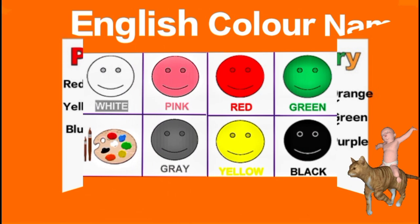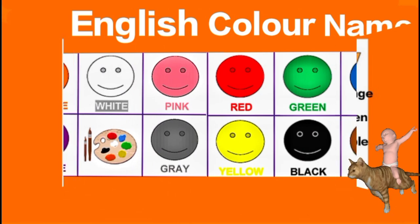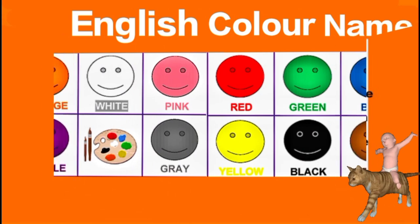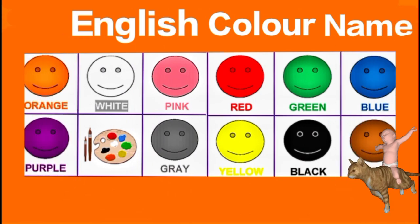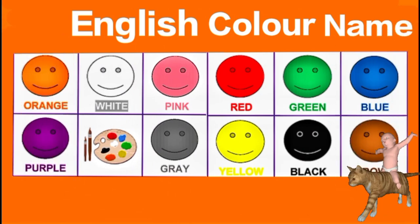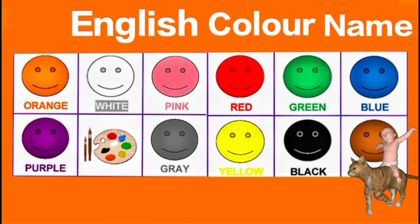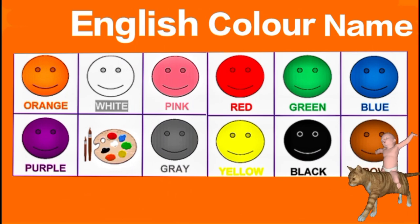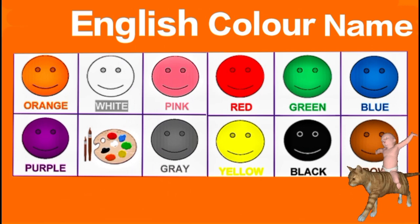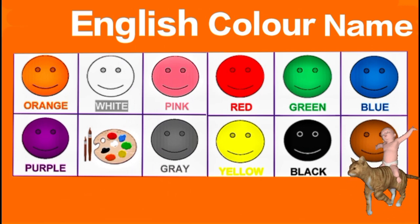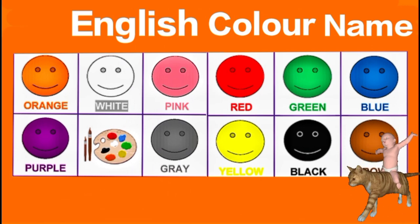English color names: orange, white, pink, red, green, blue, purple, gray, yellow, black, brown.